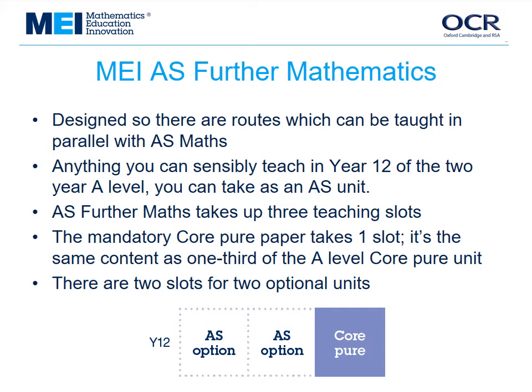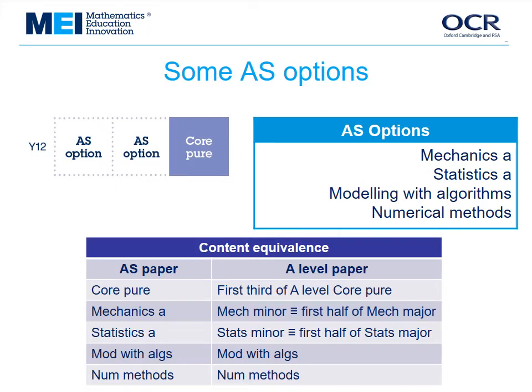Regarding AS Further Maths, it's hoped that maths departments will still be able to offer it even if their school or college generally doesn't offer ASs anymore. It's an important qualification — it shows progress beyond A-Level Maths and is a stepping stone to A-Level Further Maths. The qualification is designed so AS Further Maths can be taught alongside AS Maths. Essentially, anything you can sensibly teach in Year 12 can be turned into an AS. You sit the mandatory Core Pure paper and then any two others, and the content matches the A-Level Further Maths content.